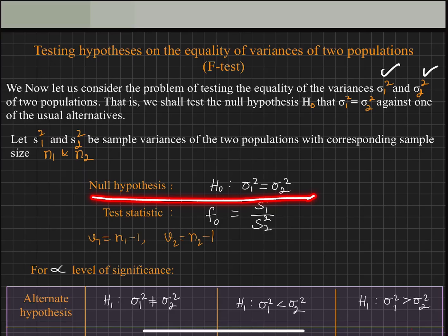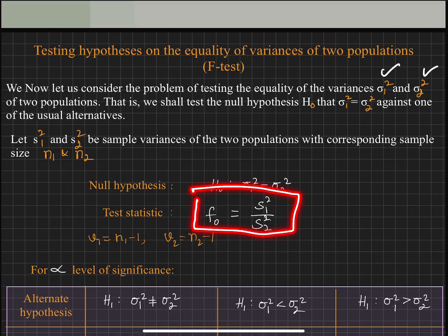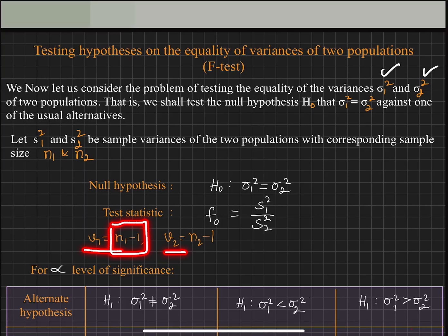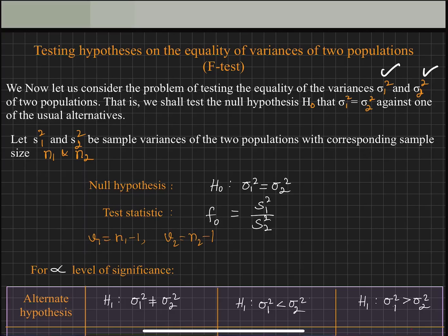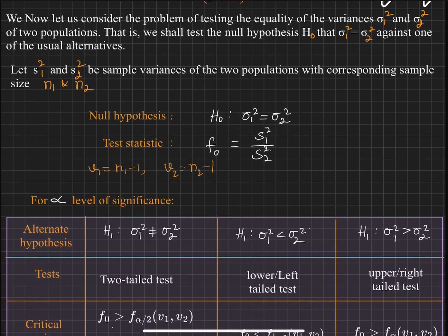The test statistic is denoted as F naught, equal to s1 square divided by s2 square. This F naught follows the F distribution with degrees of freedom v1 and v2, where v1 is n1 minus 1 and v2 is n2 minus 1 — one less than each respective sample size. To test any hypothesis, we need a level of significance and an alternate hypothesis.